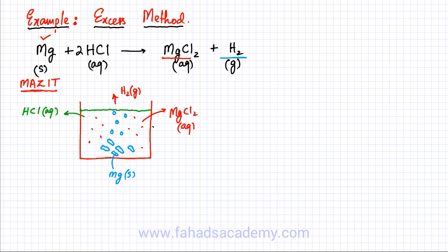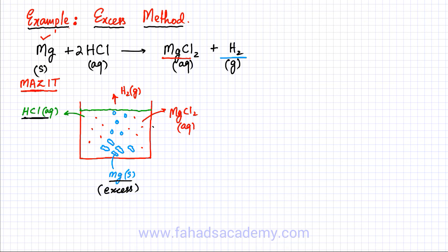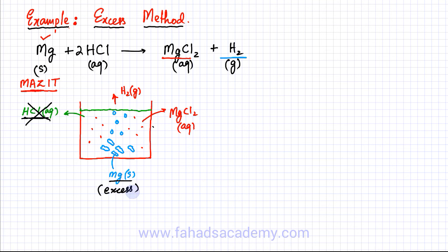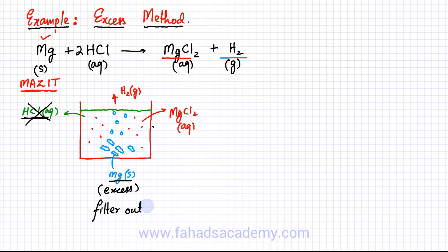Which reactant should be in excess? Remember to put the insoluble reactant — magnesium — in excess. Keep adding magnesium strips. The indication that magnesium is in excess is that the bubbles stop being produced, because once all the hydrochloric acid has reacted there is nothing left to produce hydrogen gas. Once magnesium is in excess, all the HCl is used up and converted into MgCl2 and H2. Filter out the excess magnesium solid, and your solution only contains MgCl2 (aqueous).